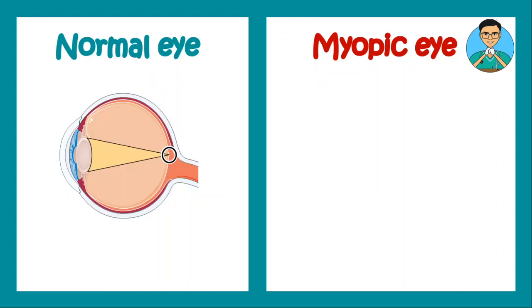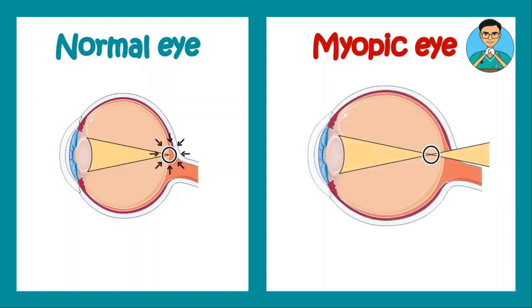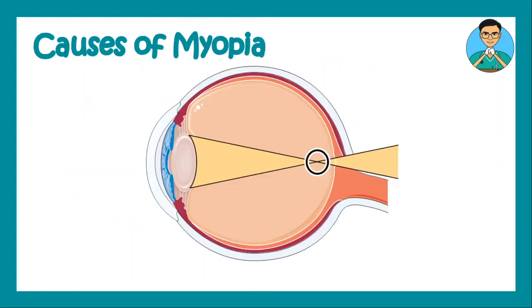In a normal eye, the light rays that fall on your eye converge over the retina to form a sharp and clear image. Whereas in case of a myopic eye, the light rays converge even before reaching the retina and form a sharp image there. On the other hand, over the retina they form a blurred image.